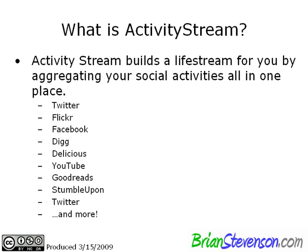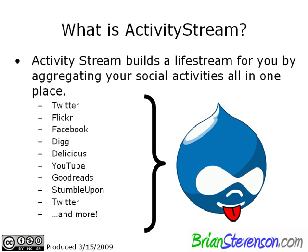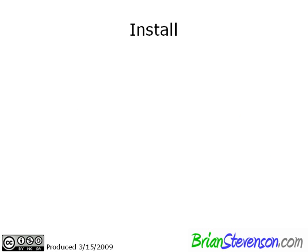Activity Stream builds a live stream by aggregating your social activities all into one place. You go onto the internet and you might tweet something, comment on a few Flickr photos, go over to Facebook and update your status. You've got all these things going on across social networking sites — wouldn't it be awesome to bring them all into one place? That's what Activity Stream does, and I absolutely love it. I've been using it for about a week and thought it would be cool to help people configure it.